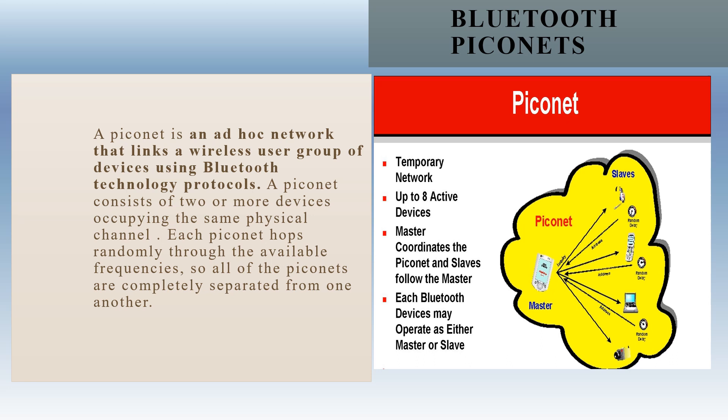Since each network is changing the frequency of its operation thousands of times per second, it is unlikely that any two networks will be on the same frequency at the same time. If it turns out that two networks are on the same frequency, it will result in confusion covering a tiny fraction of a second, and the software designed to correct such errors weeds out the confusing information and gets on with the network's business.